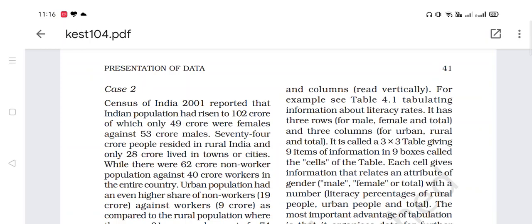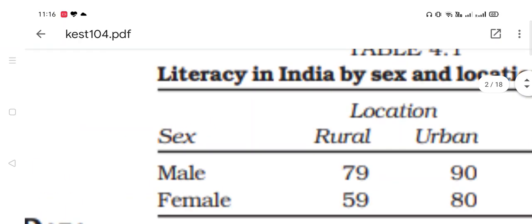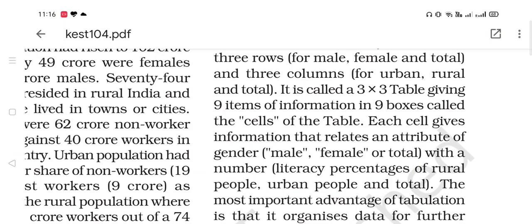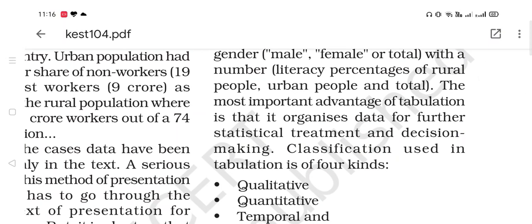The table gives 9 items of information in 9 boxes called the cells of the table. Each cell gives information that relates an attribute of gender — male, female, and total — with the literacy percentage of rural people, urban people, and total. The most important advantage of tabulation is that it organizes data for further statistical treatment and decision making. Classification used in tabulation is of 4 kinds.